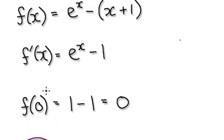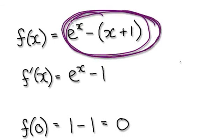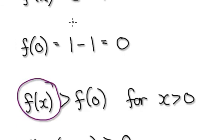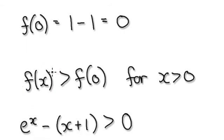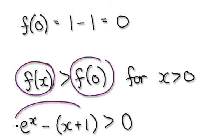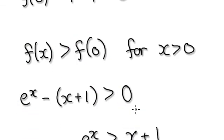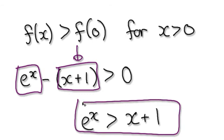Don't forget, f of x here was defined as e^x minus x minus 1. So we realize that f of x must always be bigger than f of zero. This means f of x is bigger than zero. Now visualize it as one block — add this block to both sides, and that will then give you e^x is greater than x plus 1.